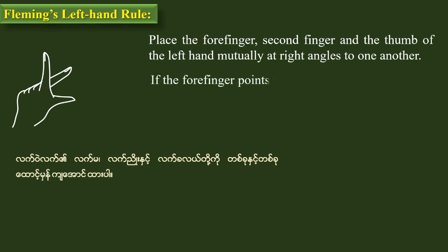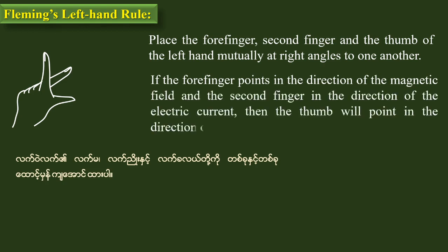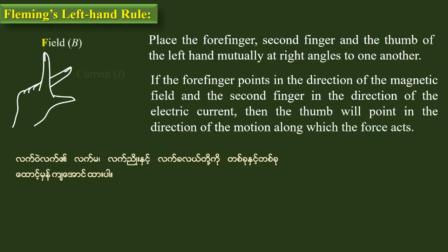If the forefinger points in the direction of the field, and the second finger points in the direction of the current, then the thumb points in the direction of the motion.